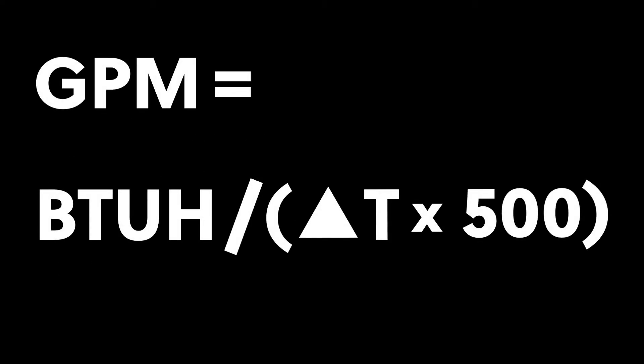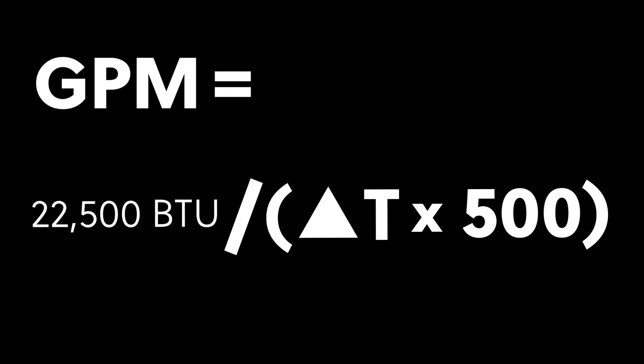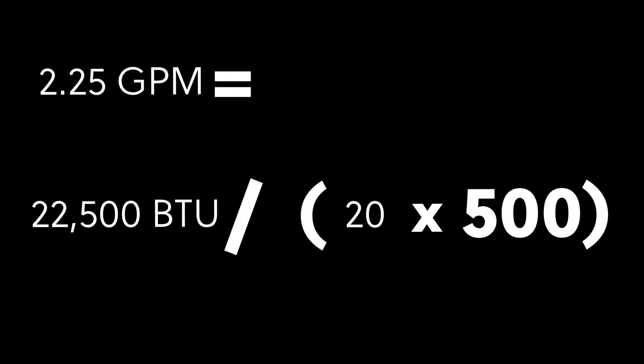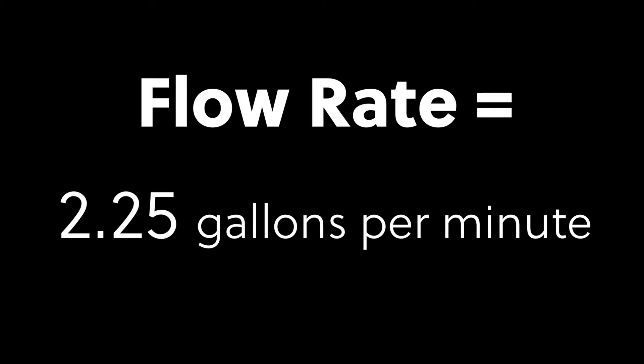So let's plug some numbers into this formula. You've calculated the heat loss of the space to be 22,500 BTUs per hour. We're running baseboard heat, so that's a delta T of 20. When we plug in our load and our delta T, the formula becomes 22,500 divided by 20 times 500, which equals 2.25 gallons per minute. We need to move two and a quarter gallons through this loop every minute.